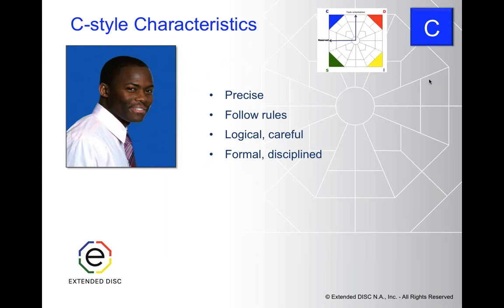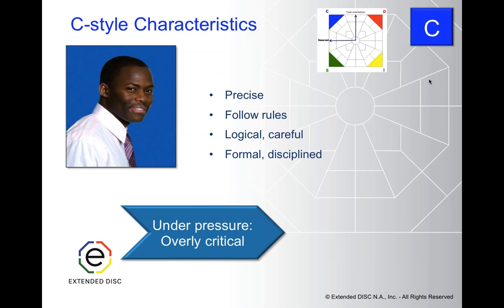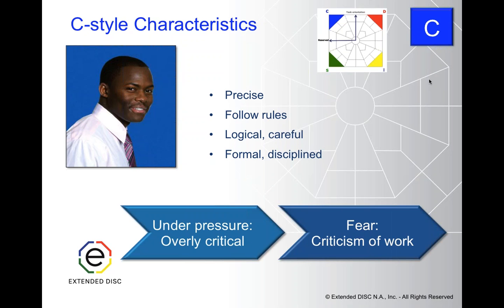C's are in the upper left-hand quadrant of the Extended DISC diamond, right between task orientation and reserved. Some attributes would include very precise — they follow rules, they're very analytical, perfectionist, and logical in their systems. Under pressure, they can appear overly critical, but it's really important to understand that C styles are even more critical of themselves. They fear criticism of their own work as well, because they believe so highly in quality work.